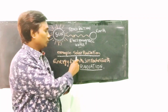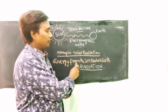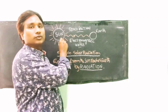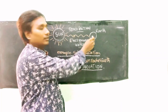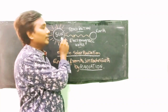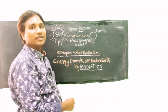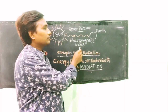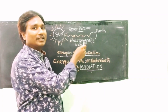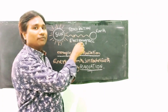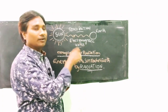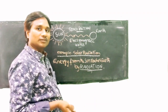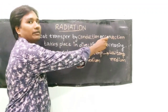An example of radiation is solar energy: energy from the sun reaches the earth's surface by means of radiation. Radiation energy can travel through space, which is a vacuum, as well as through non-vacuum media. In contrast, heat transfer by conduction or convection takes place in the direction of decreasing temperature, from high temperature to low temperature.